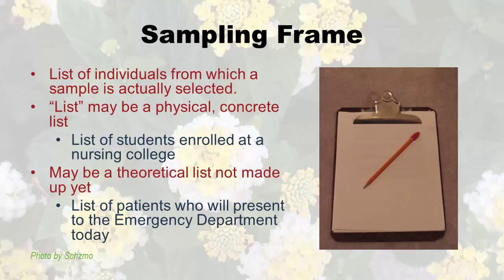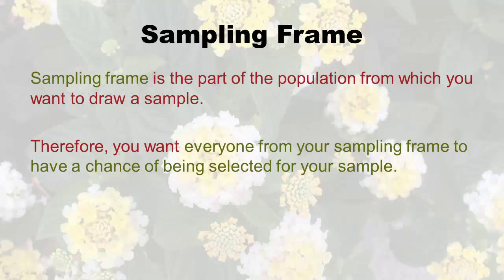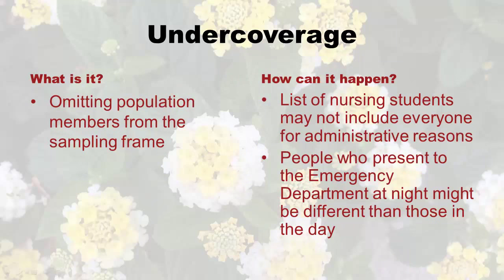The sampling frame is the part of the population from which you want to draw the sample. You want to work such that everybody from your sampling frame has a chance of being selected for your sample — you don't want to leave anyone who should be in your sampling frame out. That leads us to the concept of under coverage: omitting population members from the sampling frame. They're supposed to be on the list, but they're not there.